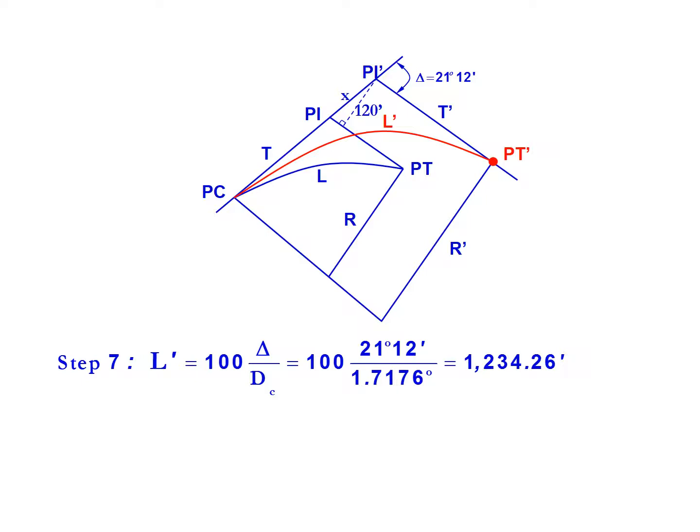Now we can find the new length of curve. It's going to be a longer curve length to connect to our PT. So 100 multiplied by delta divided by the degree of curvature, 100 multiplied by 21 degrees 12 minutes over our new degree of curve 1.7176 degrees, gives us a new length of 1,234.26 feet.